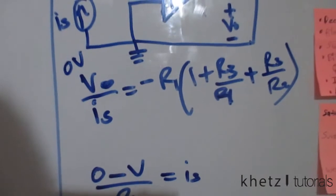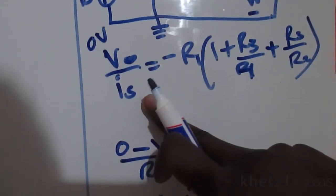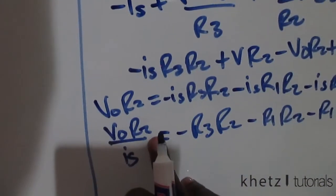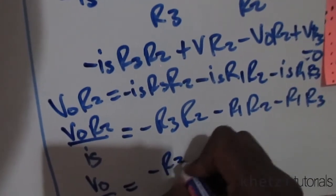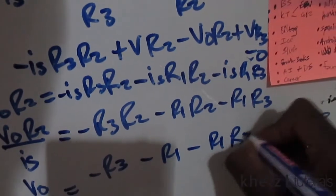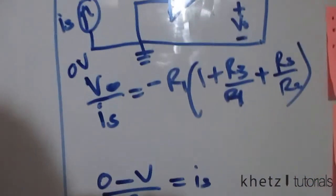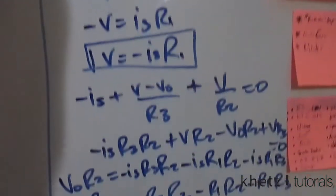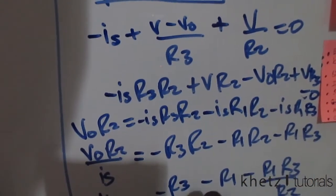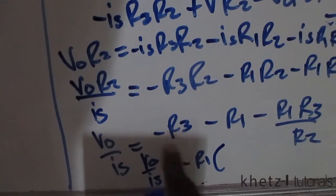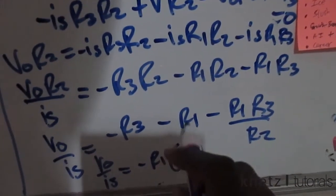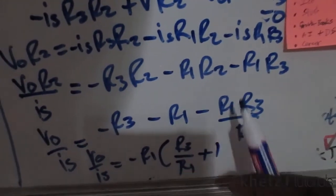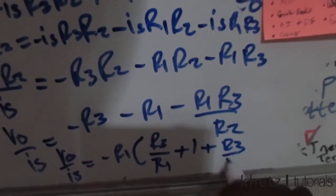The form we need to find is vo divided by is, so we divide both sides by R2. This gives vo divided by is equals negative R3, minus R1, minus R1·R3 divided by R2. From this form, negative R1 can be factored out. Factoring out negative R1, since there is no R1 in the first term, we divide to compensate so those cancel out, leaving us with the factored expression.